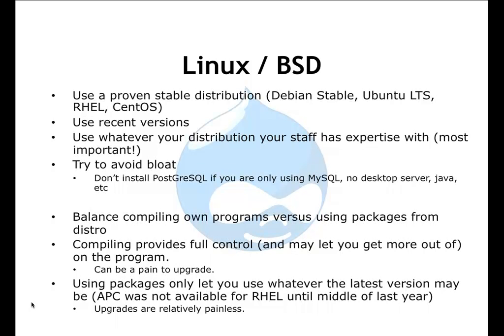You want to balance compiling your own programs versus using packages from the distribution. Sometimes packages from the distribution can be severely outdated. As an example, Debian comes with Varnish 1, and if you try to use that with a Drupal installation, it's quite broken. After talking with Josh Koenig of Chapter Three, who uses Varnish with Project Mercury, he mentioned not to use Varnish 1 — use Varnish 2. You can look at unstable Debian packages or just compile your own version. Keep in mind that if you've compiled your own version, you'll have to go through that process again for any future upgrades.